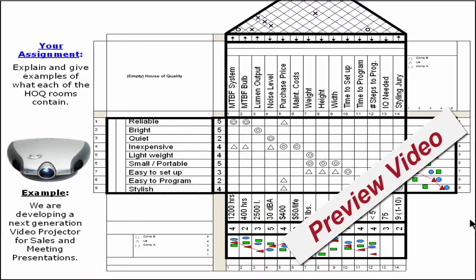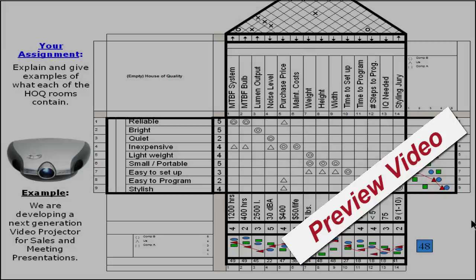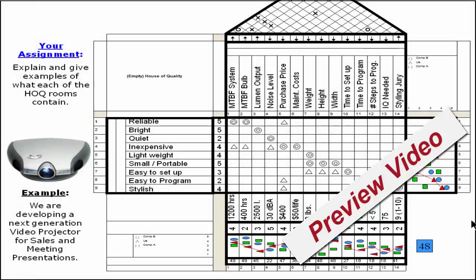Down on the bottom is another graph of technical assessments — your benchmarking data. And then way at the bottom are calculated importance ratings. We'll take a look at each of these rooms in detail shortly.